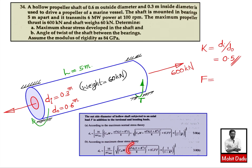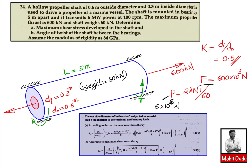The power transmitted is given as P = 2πNT/60. With P = 6 megawatts = 6 × 10⁶ W and N = 100 rpm, solving for torque gives T = 573,000 N·m — approximately 57,300 N·m in SI units. This is the torque transmitted by the shaft.